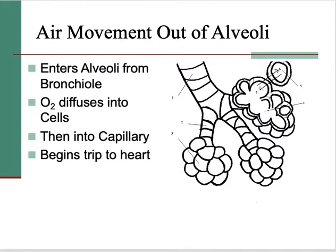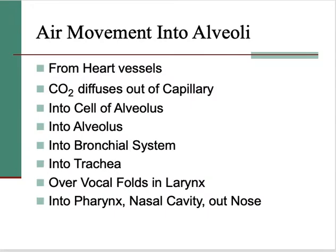To summarise: air comes into the alveoli from the bronchioles. Oxygen diffuses from the alveoli into the capillary, and once in the capillary it travels in the blood towards the heart. In the opposite direction, blood coming down from the heart into the lungs is full of carbon dioxide. When it gets to the lungs, the carbon dioxide diffuses from the blood capillaries out into the alveolus, then into the bronchioles, bronchi, trachea, voice box, and out through the nose and mouth.